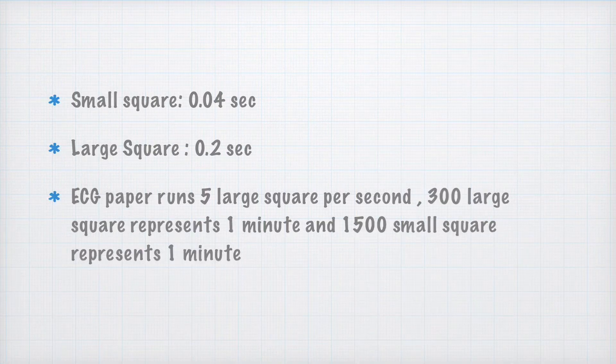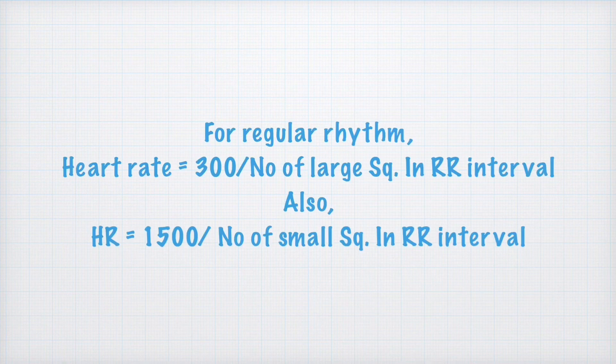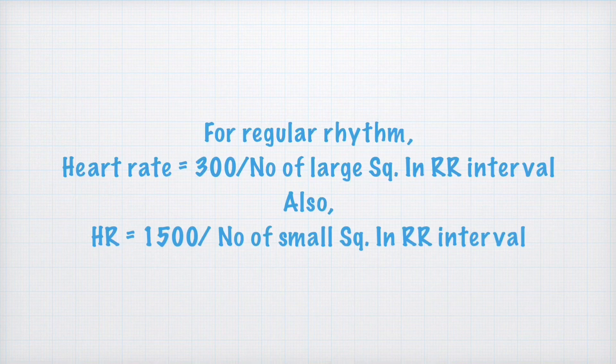So if the rhythm is regular, that is, each RR interval is equal, then heart rate equals to 300 divided by number of large squares in RR interval.